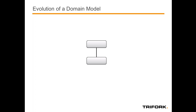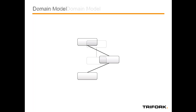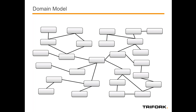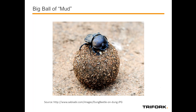This domain model usually starts off really simple in any application. In the beginning it's a very simple domain model — everybody understands it and it's really obvious as to what its role is. When time progresses, the domain model evolves and quickly becomes this huge, quite often entangled model where a lot of entities depend on other entities. Very often it's the case that having this very large and complex domain model, you end up with the big ball of mud.